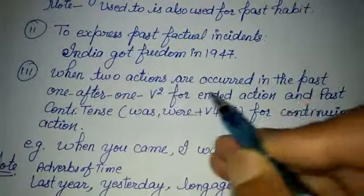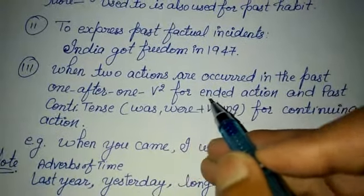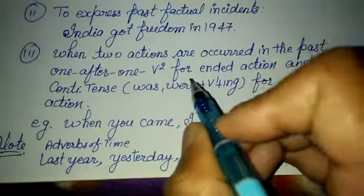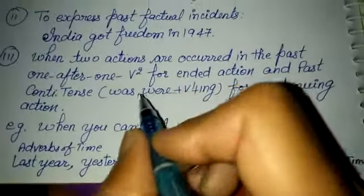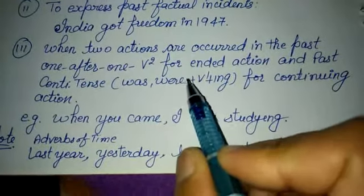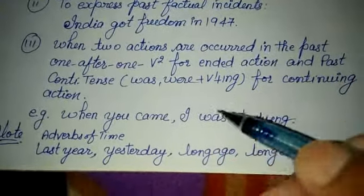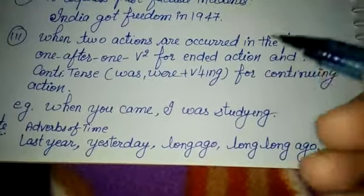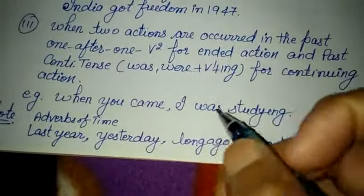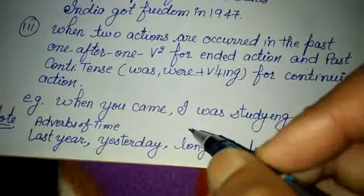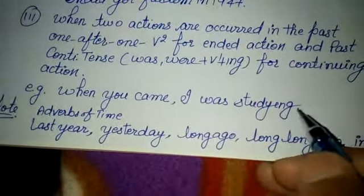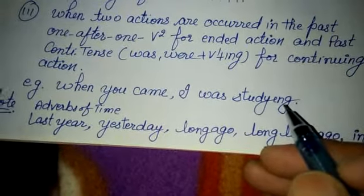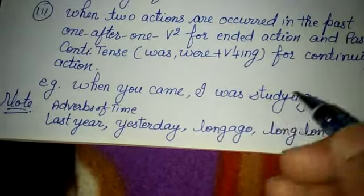The third point: when two actions occurred in the past one after another — we use the verb's second form for the completed action, and past continuous tense (was/were + V1 + ing) for the continuing action. In the past, if two actions are given and one is complete while the other is still continuing at that same time, we use past continuous tense for the ongoing one. For example: 'When you came, I was studying.' Remember this point, as it will also be used in past continuous tense.